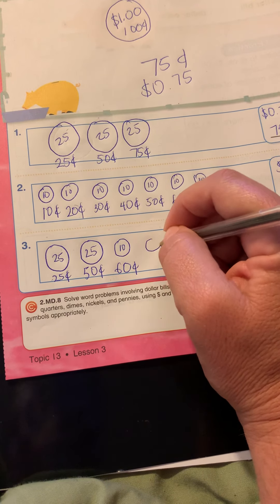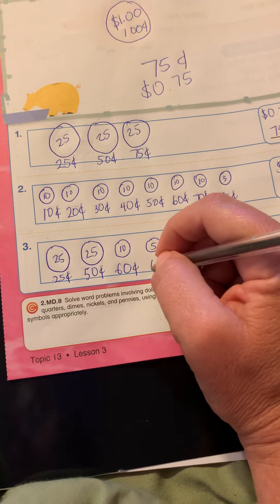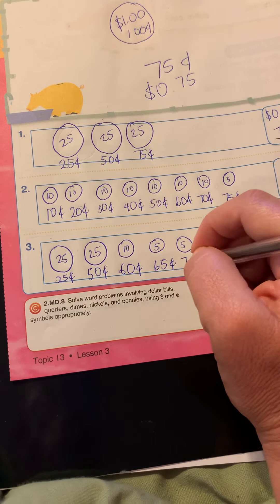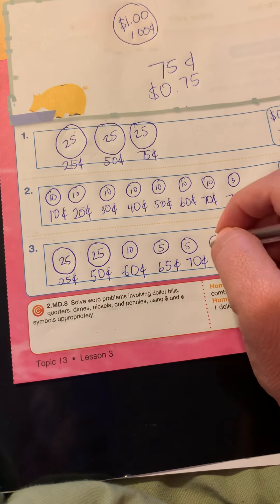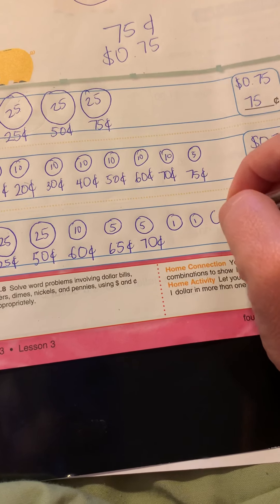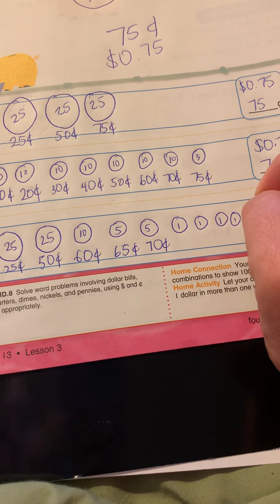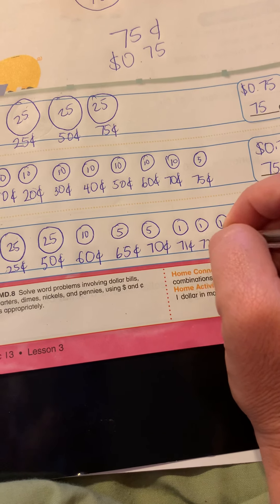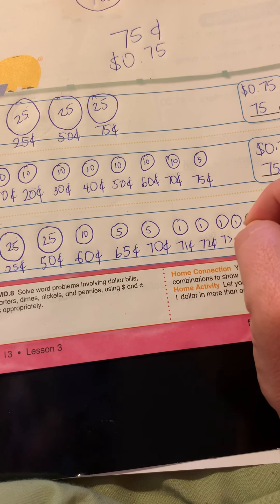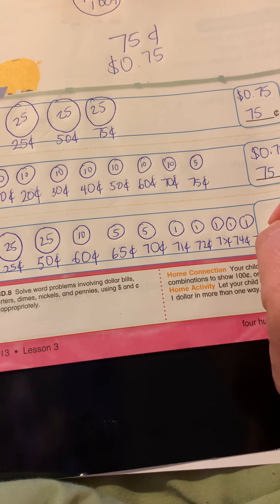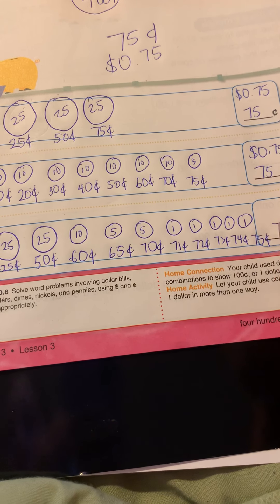You can do a nickel which would take it to 65, I could do another nickel which would take it to 70, and then I could do five of these guys. What are they called? Pennies, good job, they barely fit. So 71, 72, 73, 74, and 75, which is the total that I want.